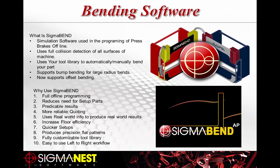Sigma Tech offers Sigma Bend, a simulation software that programs the press brake offline. It uses full collision detection to detect all surfaces of the machine, the part, and even the shop floor. With a fully customizable tool library, it can automatically or manually bend parts, and supports both bump bending and offset bending. Benefits include reduced need for setup parts, predictable and reliable results, more accurate quoting, increased floor efficiency, quicker setup times, and precision flat patterns.